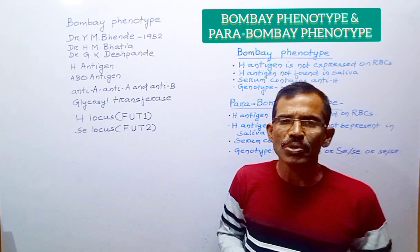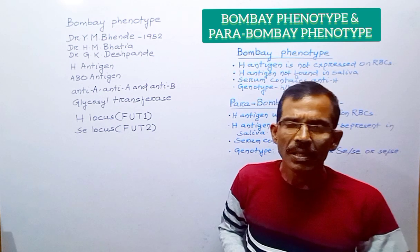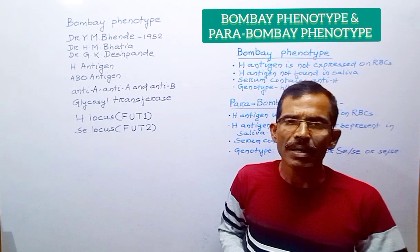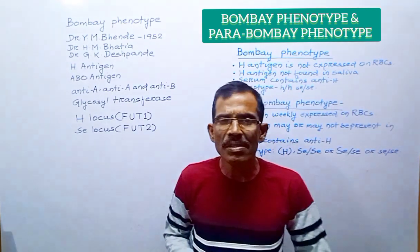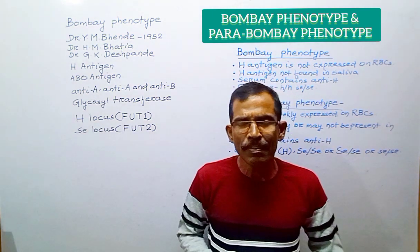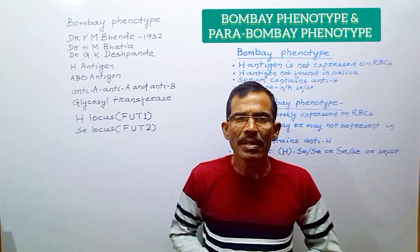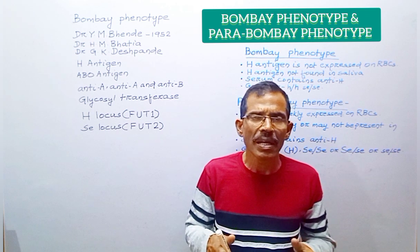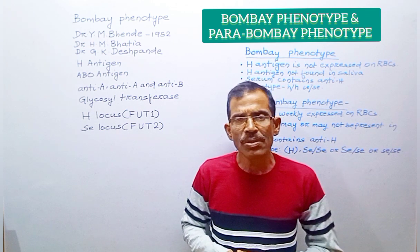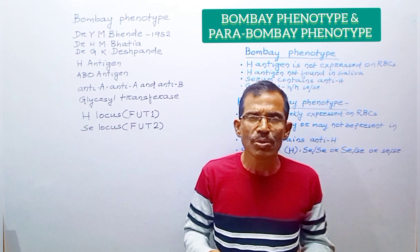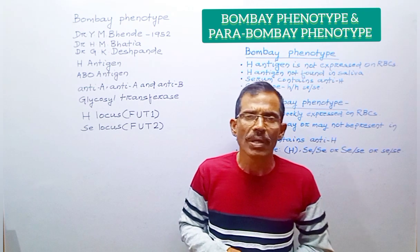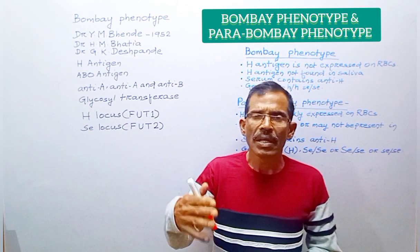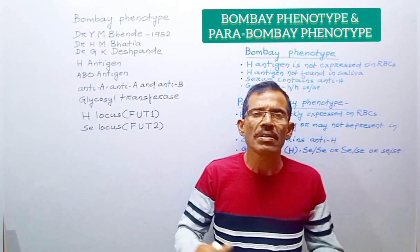In the absence of the H antigen, which is also the precursor substance of the ABO antigen, individuals with the Bombay blood group are not able to produce antigen A and B. So these individuals are deficient in the H antigen and also A and B antigens. As a result, these individuals produce anti-H, anti-A, and anti-B. Individuals with Bombay phenotype can only be transfused with blood from another individual with Bombay phenotype, as transfusion from any other blood group initiates a severe transfusion reaction.